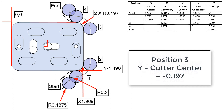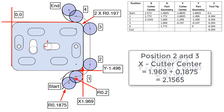At position 3, the cutter center Y coordinate will be the same as the part geometry, negative the part radius, which is negative 0.197. The X coordinate for the cutter center will be the same as position 2: 2.1565.